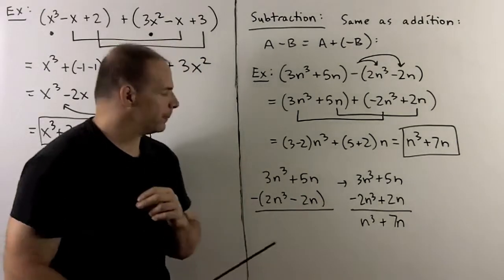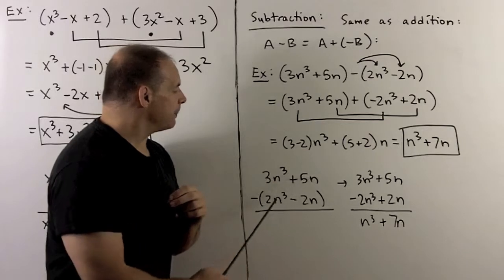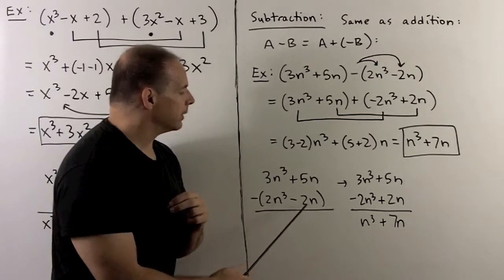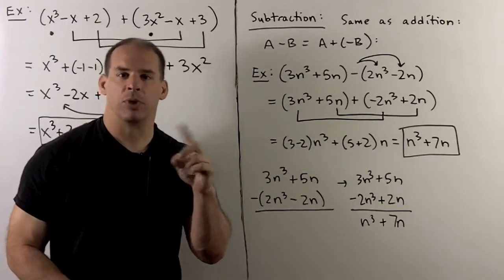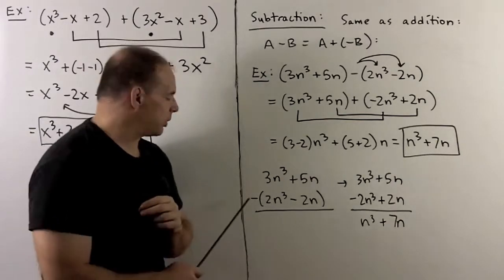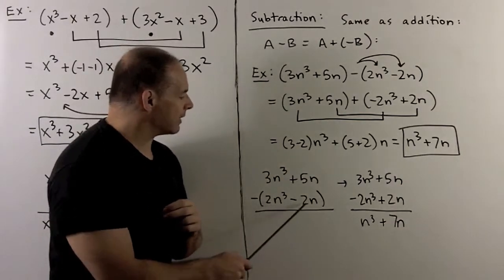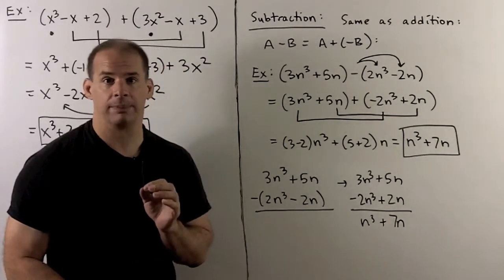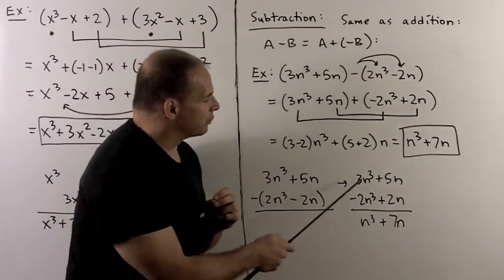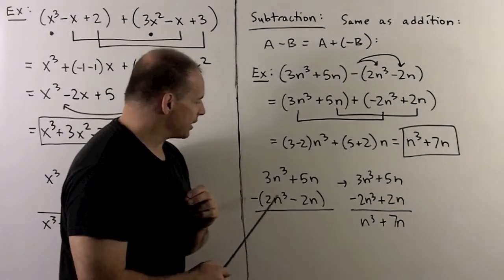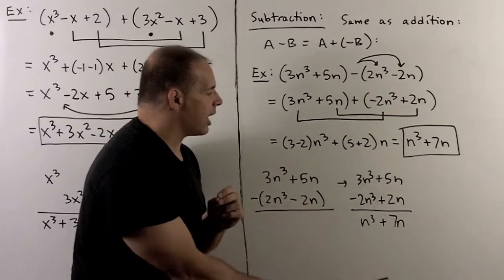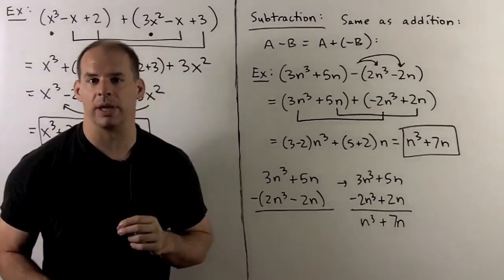Of course, we could do it the other way with columns. I have 3n cubed plus 5n, minus the quantity 2n cubed minus 2n. It's important to keep the parentheses before you distribute, because the common error is to put the minus sign only on the first term and not the second. So I write everything out showing the distribution: minus sign goes to 2n cubed, and goes to minus 2n, which becomes plus 2n. Then I add down the columns and get the same answer.